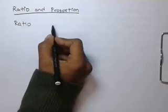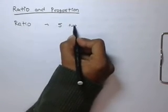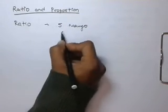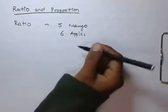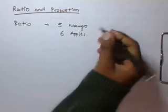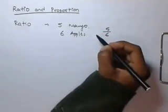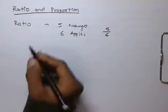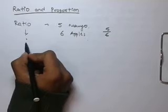Let's say in a basket there are five mangoes and six apples. So the ratio of mangoes and apples is 5 by 6, dividing one quantity by another. The ratio is represented generally by the symbol colon.